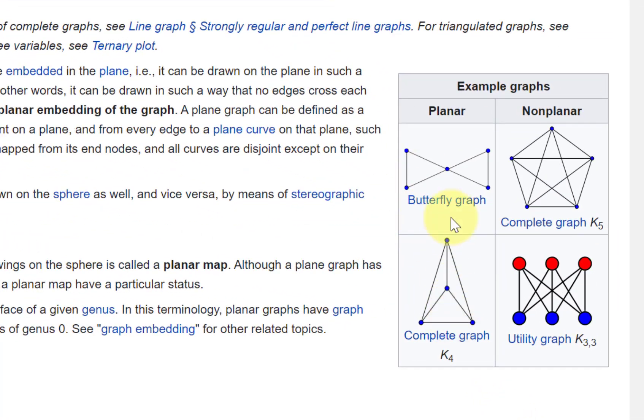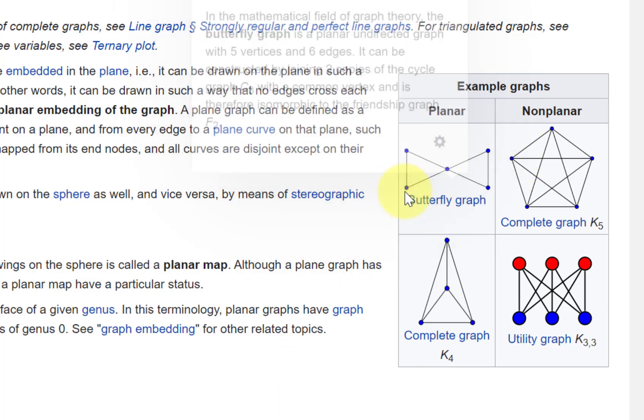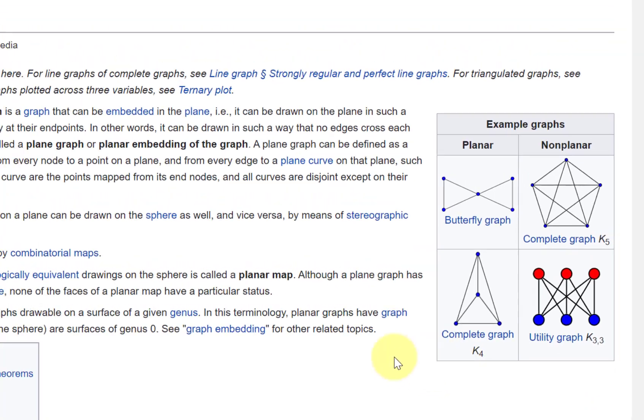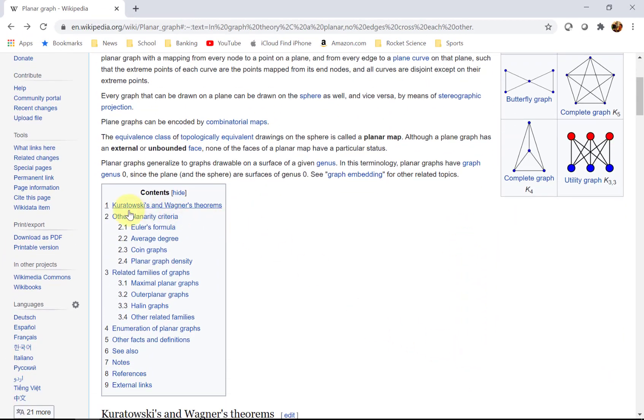And, these two graphs here, they are planar and these two non-planar. This graph does have five vertices, but it's not the complete graph on five vertices. Notice, for example, these two vertices at the bottom and these at the top, they're not connected. We don't have this corner here or this vertex connected to that one up there. So, this thing that's called the butterfly graph here, it is planar and so is K4. But, K5 and K33, they are non-planar and it comes down to this Kuratowski's or Wagner's theorem.